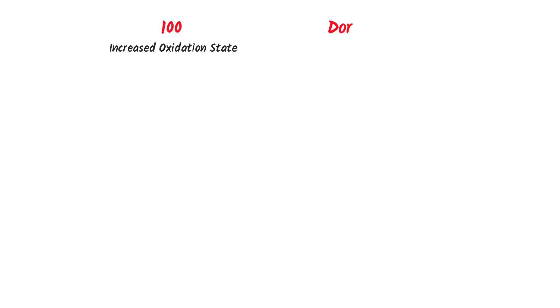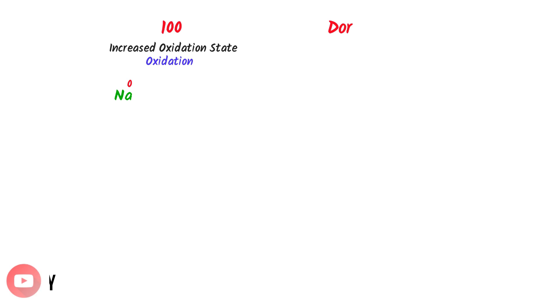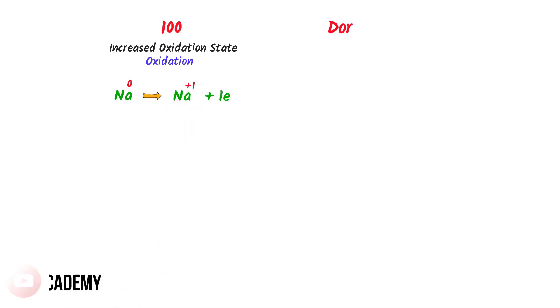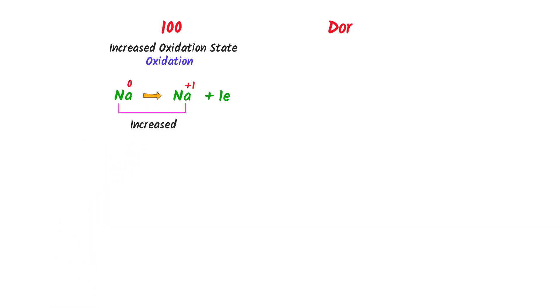The trick is called '100 door.' Here, '100' stands for 'increased oxidation state is oxidation.' For example, consider a sodium atom. When a sodium atom loses one electron, it becomes a positive ion. The oxidation state of sodium increases from zero to positive one.